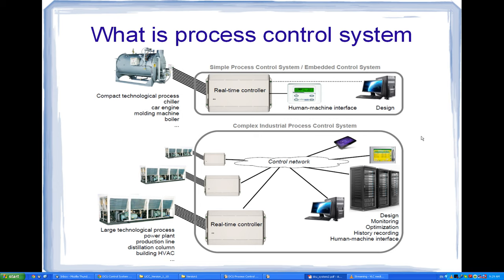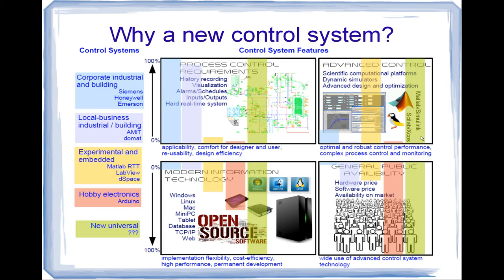Now the question is: why a new control system? On this picture we have different kinds of control systems. We have a group of corporate industrial and building control systems built by corporates, local industrial and building control systems, experimental and embedded control systems, and hobby electronics.